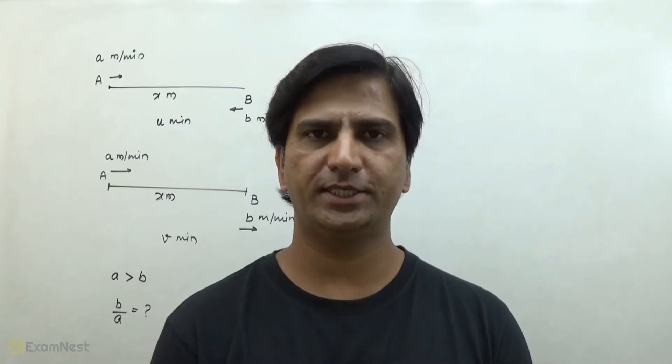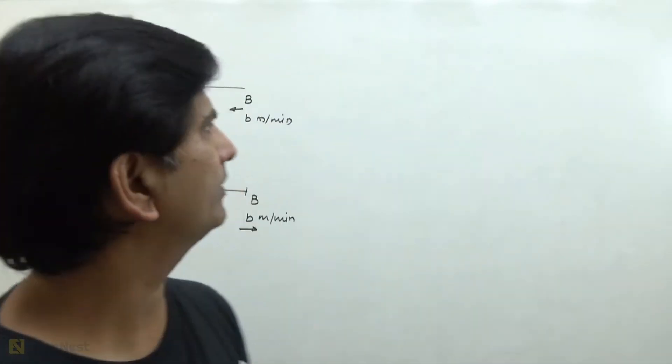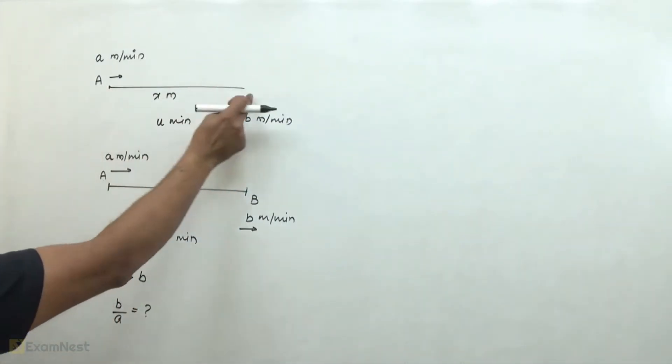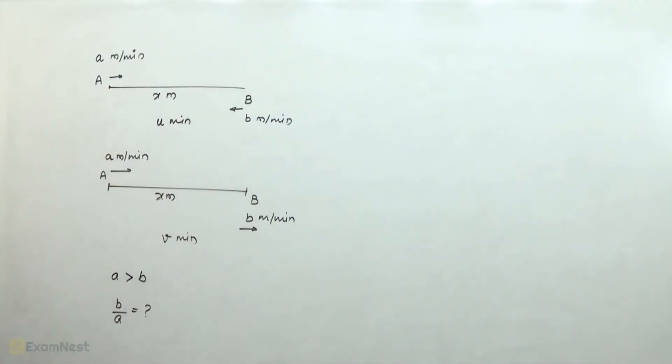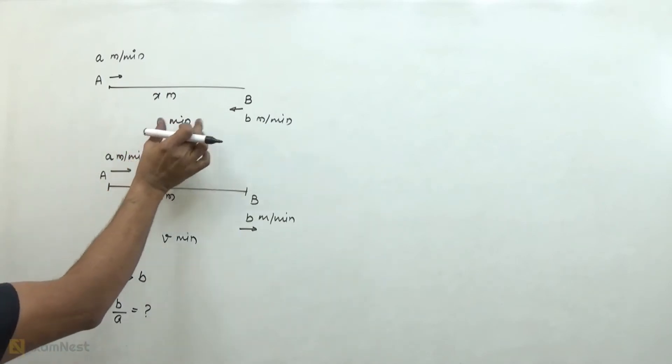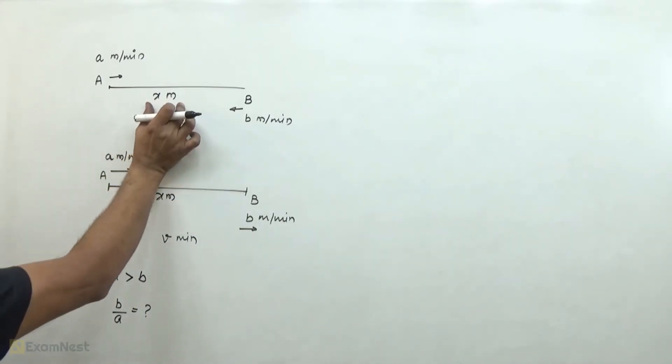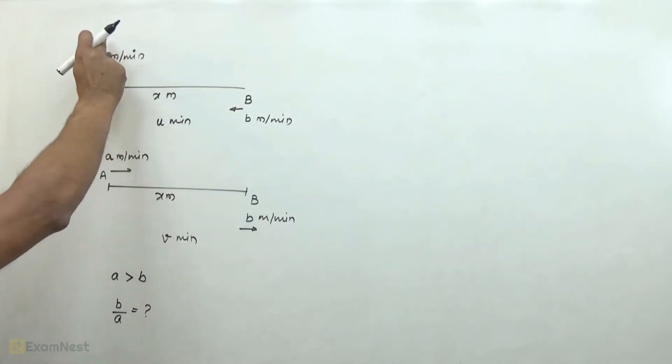This question is an easy to moderate level. There are two insects A and B. When they are flying in the opposite direction, they pass in u minutes. They pass the distance of x meters, and they are traveling at the speed of a meters per minute and b meters per minute respectively.